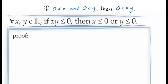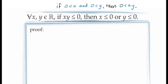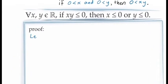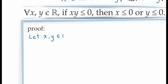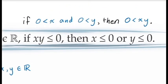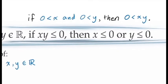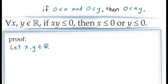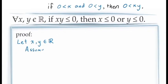Starting the proof, we notice that this is a general statement about all values of X and Y in the real numbers, and so we begin by introducing arbitrary constants X and Y in the real numbers. Next, we need to demonstrate the conditional statement: if XY is less than or equal to 0, then X is less than or equal to 0 or Y is less than or equal to 0. Since we're going to prove this using contraposition, we start with the assumption that the consequent is false — in other words, we assume both X and Y are greater than 0.